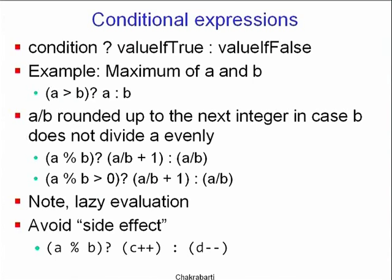For example, to write the expression for the maximum of two numbers a and b, write it as 'a > b ? a : b'. This is very easy to read: if a is greater than b then a, else b. It is an expression form of the if statement.